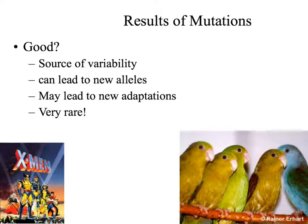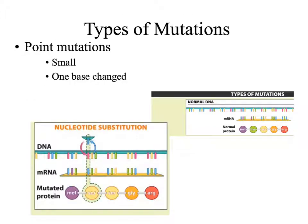Generally, mutations are either detrimental or neutral. There are many types of mutations that we see in the DNA sequence. Point mutations are a small change involving one base in the DNA sequence. We are going to look at three types of point mutations.